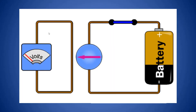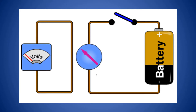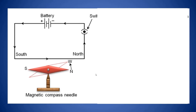What we generally observe is this: when the circuit is on, we observe the deflection of the needle of the compass. When the circuit is on, the compass needle gets deflected, and when it is off, it comes back to its original position. Now, this deflection of the compass needle changes with the direction of flow of electric current. When the electric current flows from south to north direction, the deflection of the compass needle is in one direction.